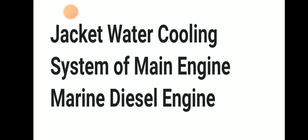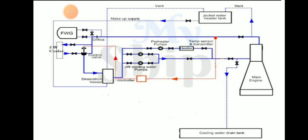Welcome to the channel. Today we will be discussing the jacket water cooling system of the main engine. Here in the figure we can see the main engine, cooling water dryer, jacket water header tank, fresh water generator, heater, pre-heater, pump, temperature de-aeration vessel, control valve, jacket water cooler, and more.